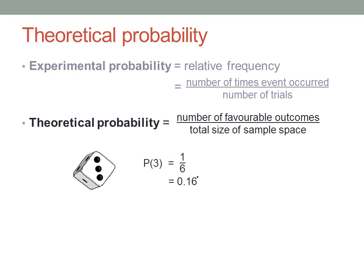What if, instead, I'm interested in more than one outcome? What's the theoretical probability of rolling a number less than three? Well, there are two outcomes less than three out of the six possible outcomes. So the theoretical probability is one in three, or thirty-three and a third percent.